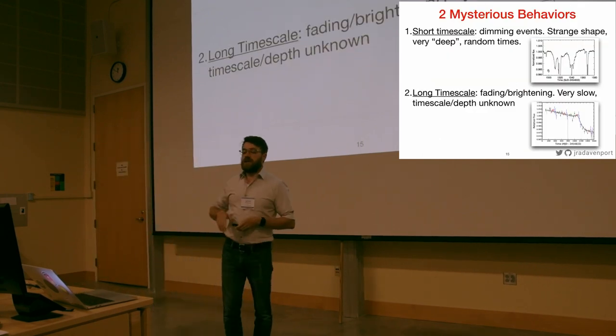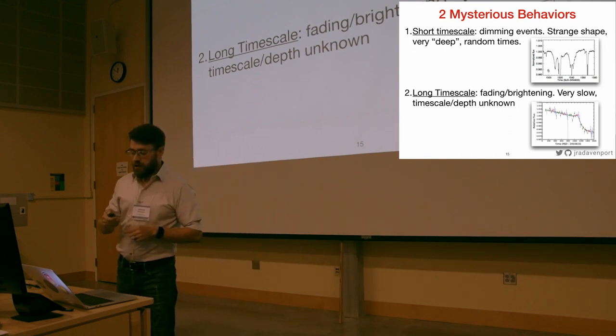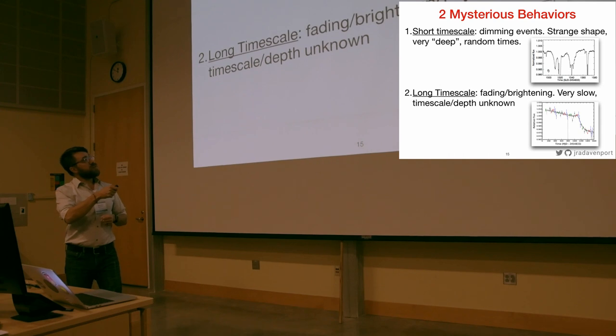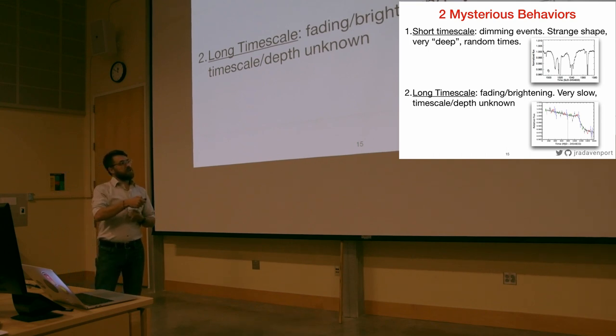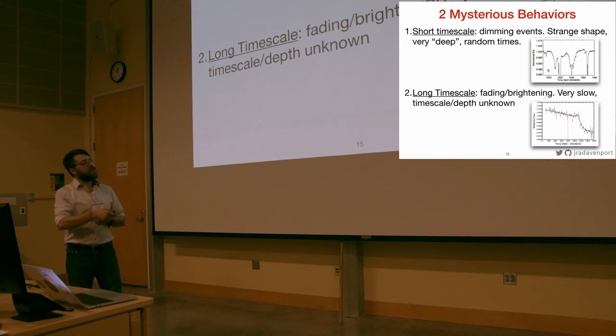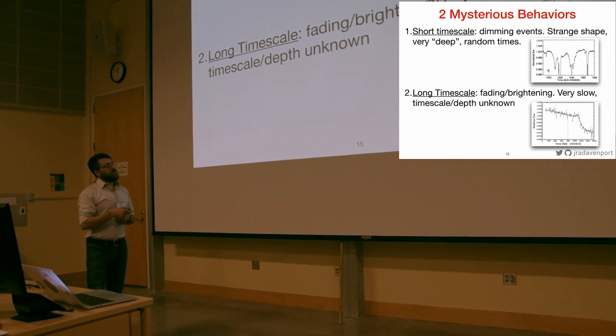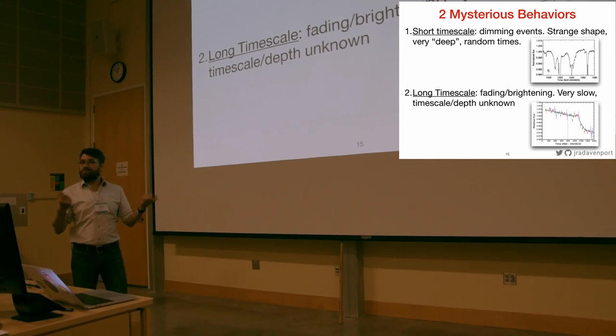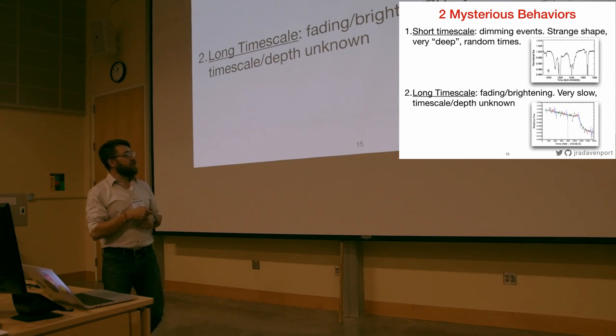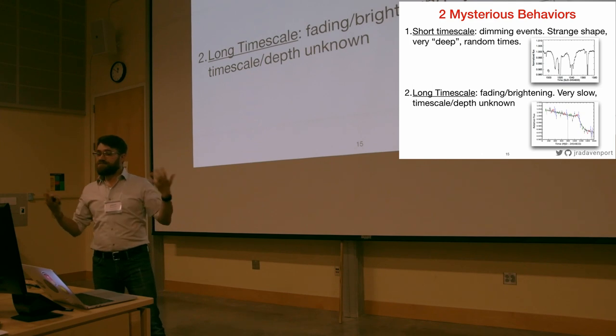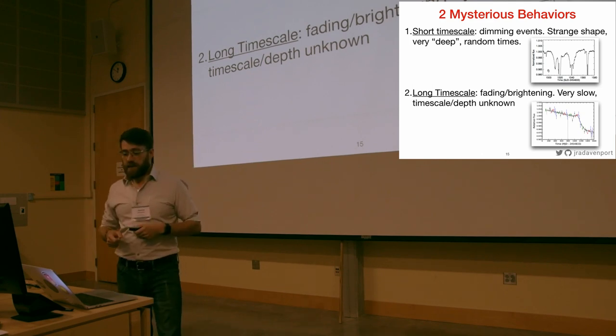So Boyajian Star has two mysterious behaviors to summarize. On short timescales, there are very unusual shaped dips, which probably are some kind of occulting rocks or dust or something. On long timescales, there are also slow changes to the brightness of the star. While a little less sexy, equally unexplainable. And what we know from a little bit of color monitoring we have, it looks kind of like dust. We have a little bit of UV data, a little bit of infrared data, a lot of optical data, and it looks kind of like dust.